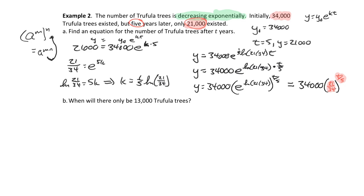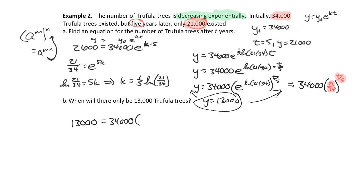For the second part, we want to know when there will be only 13,000 Truffula trees. We set y equal to 13,000: 13,000 equals 34,000 times (21/34) to the t/5. Dividing by 34,000 gives 13/34 equals (21/34) to the t/5.